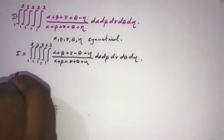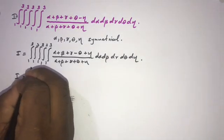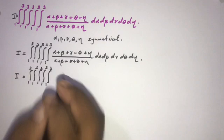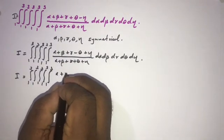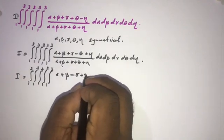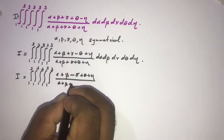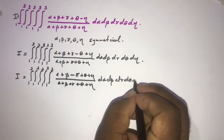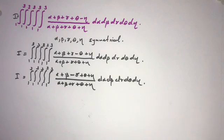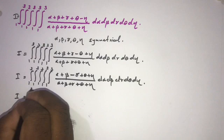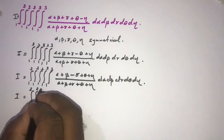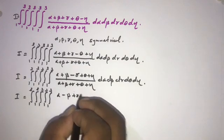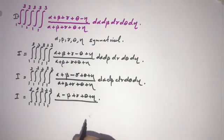Similarly, we can write I as the integral from 1 to 3 (five times) of (alpha plus beta minus gamma plus theta plus eta) over (alpha plus beta plus gamma plus theta plus eta), d alpha d beta d gamma d theta d eta.